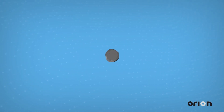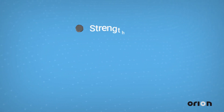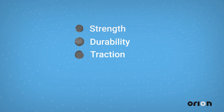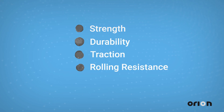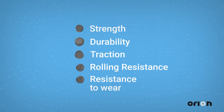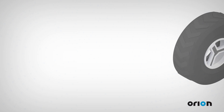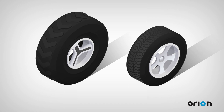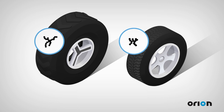The particle size and structure determine the role different types of carbon black will play in a tire. Carbon black is crucial to enhancing a tire's strength, durability, traction, rolling resistance, and resistance to wear. It's important to understand that there are multiple types of tires, and it would be hard to find two tire models with the same carbon black content.